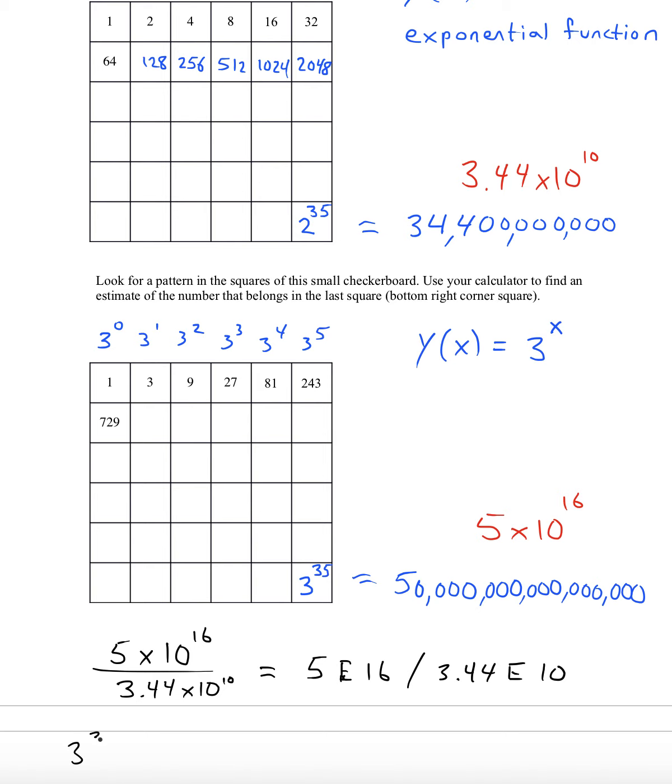3 to the 35 is more than a million times larger than 2 to the 35. And hopefully this simple example just demonstrates the power of exponential mathematics.